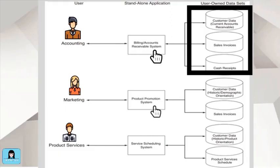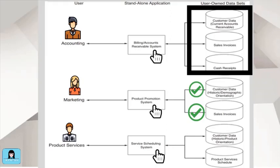The marketing department uses a product promotion software to add new or update existing customer records and record sales invoices sent by accounting. The data processed by marketing are stored on a customer database and sales invoices database that are independent of the databases of accounting and product services. The product services department uses a service or delivery scheduling software to record data about customers and delivery schedules, stored on databases also independent of accounting and marketing.